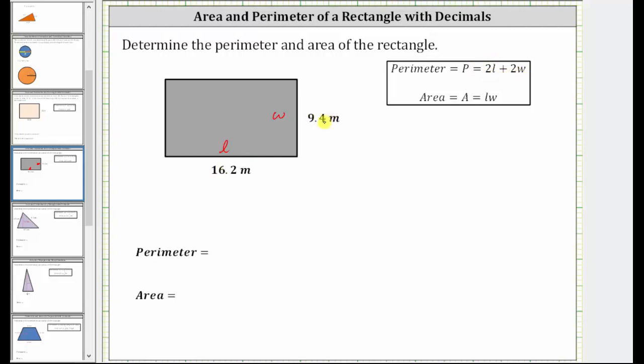But since the length and width are in decimal form, I think it'll be easier to add the lengths of the four sides rather than determine two products involving decimals and then a sum. So let's label the lengths of the opposite sides. We know this length is 16.2 meters and this side has a length of 9.4 meters.